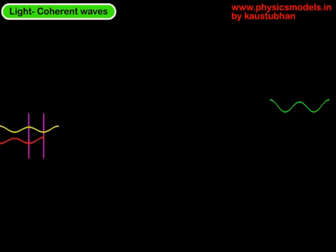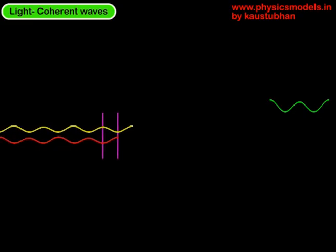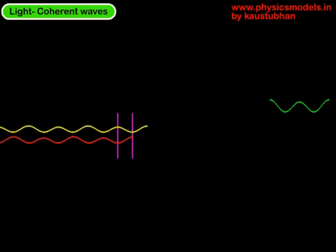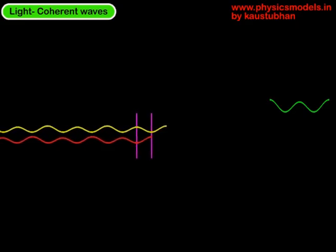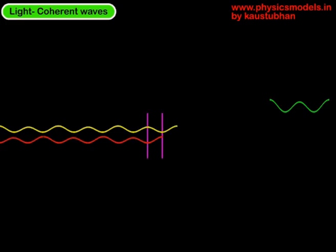You can see those pink rods again, and it's very clearly seen that the distance between those two pink rods, which denotes the phase difference, is not changing with time. The distance is remaining the same. The pink rods are not getting farther apart from each other or closer to each other.